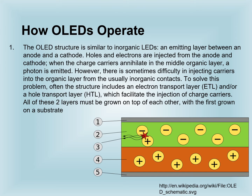Now let us see how Organic LEDs operate. The Organic LED structure is similar to inorganic LEDs. There will be an emitting layer between an anode and a cathode. Holes and electrons are injected from the anode and cathode, and when the charge carriers annihilate in the middle organic layer, a photon is emitted. However, there is sometimes difficulty in injecting carriers into the organic layer from the usually inorganic contacts. To solve this problem, the structure often includes an electron transport layer (ETL) and a hole transport layer (HTL), which facilitate the injection of charge carriers.